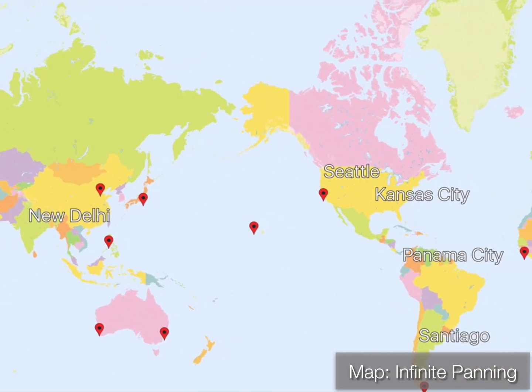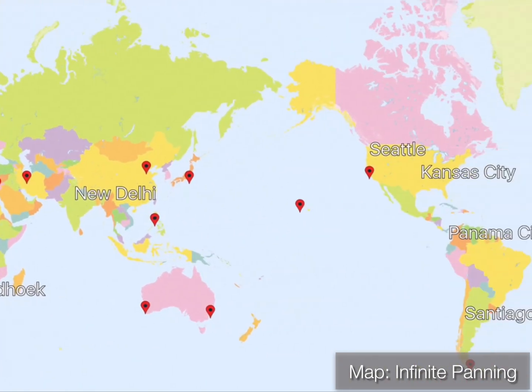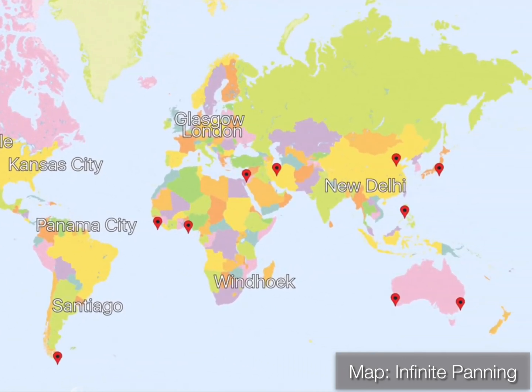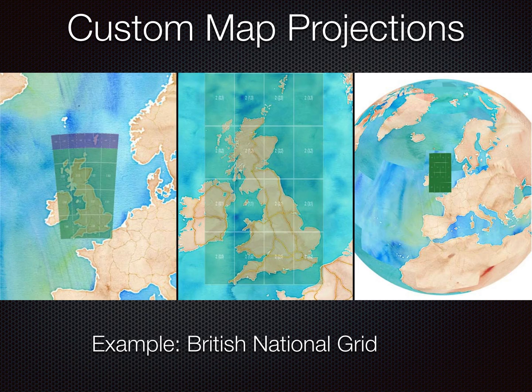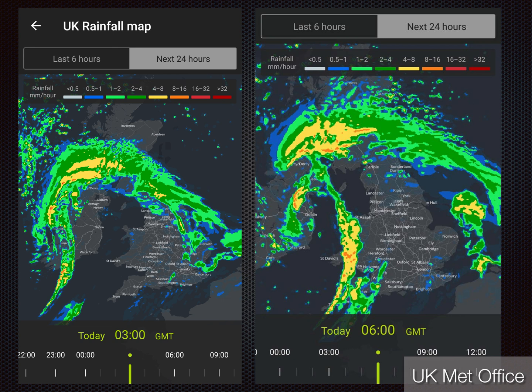You can also do cool features like infinite panning for a 2D map, because why not? But a much more complex feature we can do is map projections. We can display a map projection with a flat map, we can overlay data from a map projection onto the globe, we can do whatever we like — which is useful for things like the UK Met Office app. They're displaying this data in the British National Grid, because that's their projection and that's how they wanted it to look.